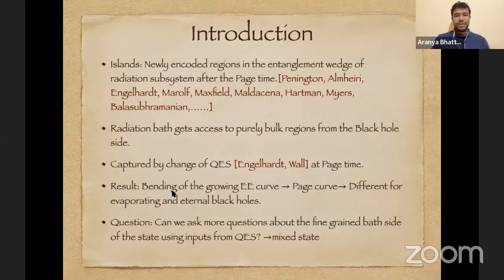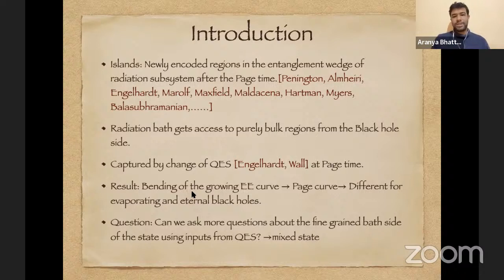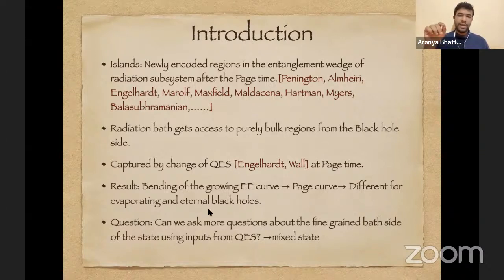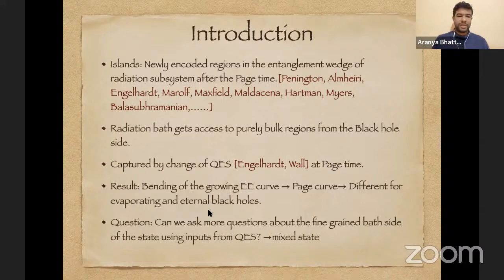This transition happens at page time. The main result is that the growing entanglement entropy curve bends at some point — the page time — and we indeed get a page curve, which differs for evaporating and eternal black holes. For evaporating black holes it goes up and after the bending comes back down to zero, whereas for an eternal black hole it saturates after page time.